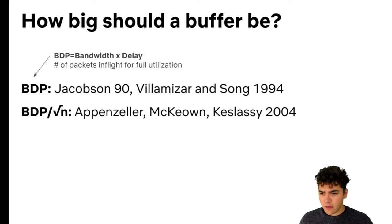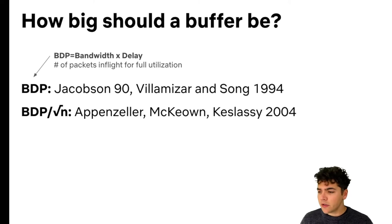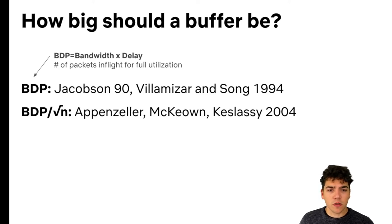There is another rule of thumb from 2004 by Appenzeller, McKeown, and Kessley known as the square root of n rule. This rule says you need a bandwidth delay product over the square root of the number of flows sharing the link. So as more and more flows use a link, you can get away with a smaller and smaller buffer.